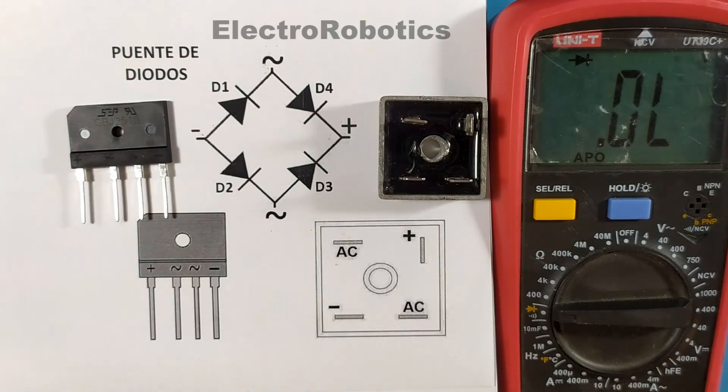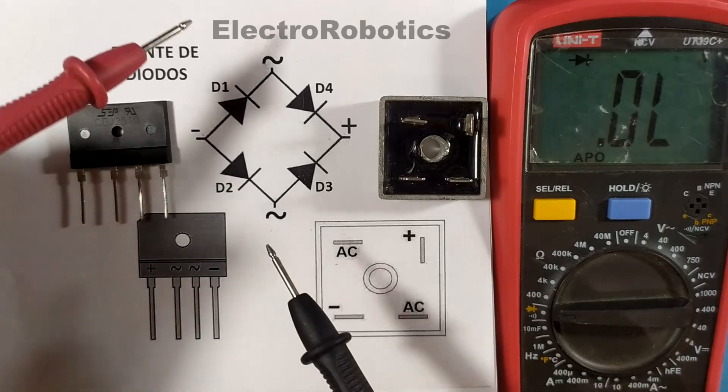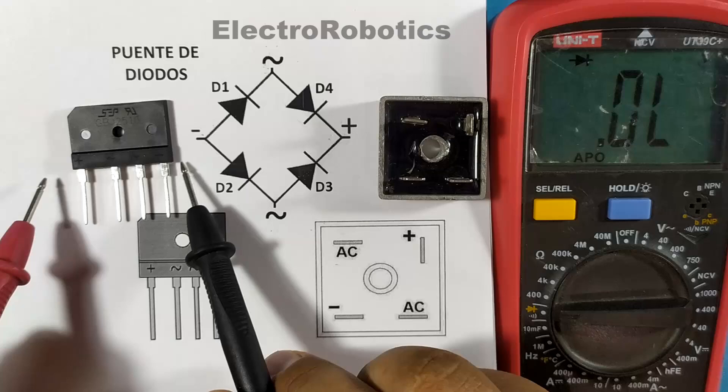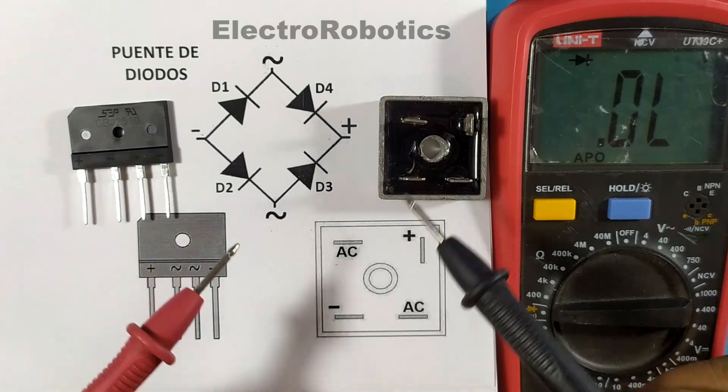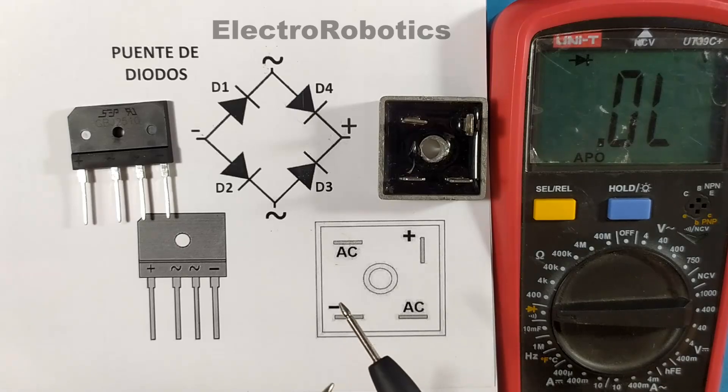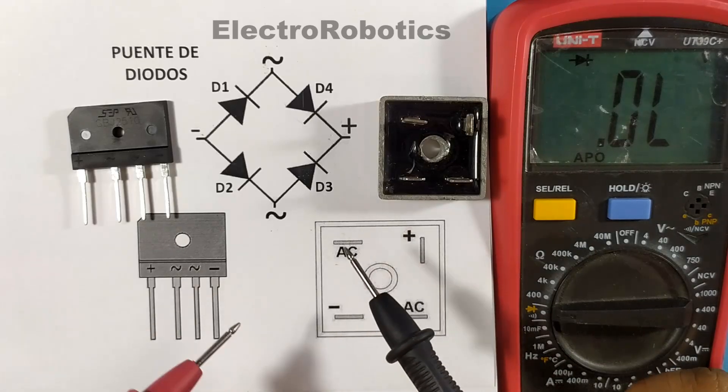Now the operation is as follows. Firstly, the diode bridge has 4 terminals. It does not matter what shape or appearance it has, it will always have 4 pins. Now those 4 pins are distributed in the following way.